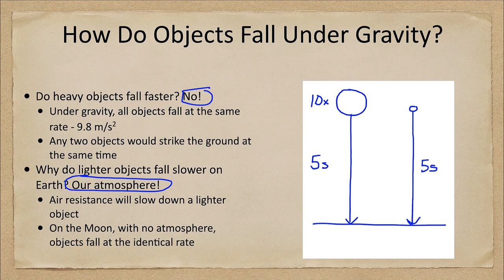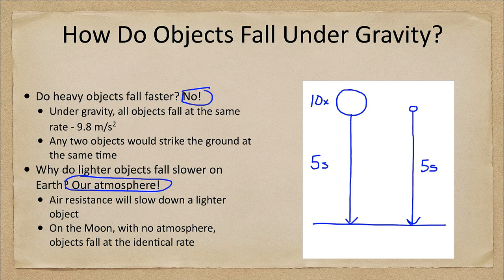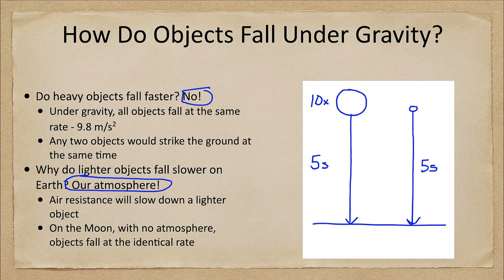Now you can do this experiment yourself. If you take a book and a piece of paper and drop them at the same time from the same height, you will see that they do not hit the ground at the same time. Now take that same piece of paper and crumple it up and drop them again from the same height, and you will see that they do strike the ground at the same time.